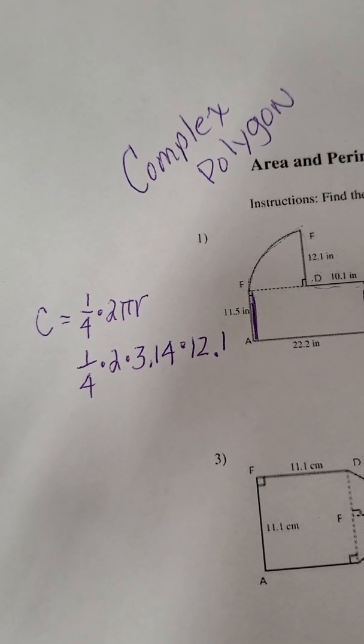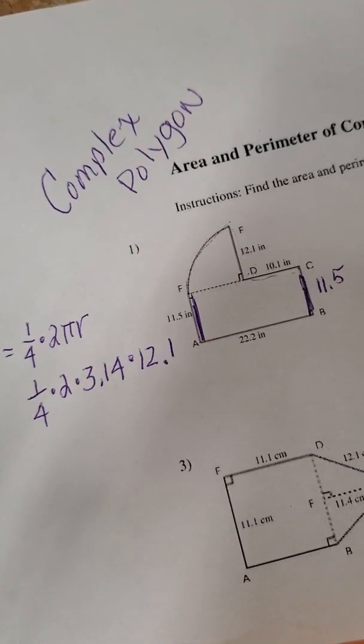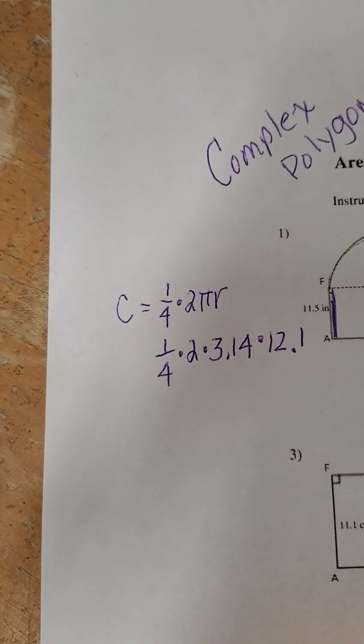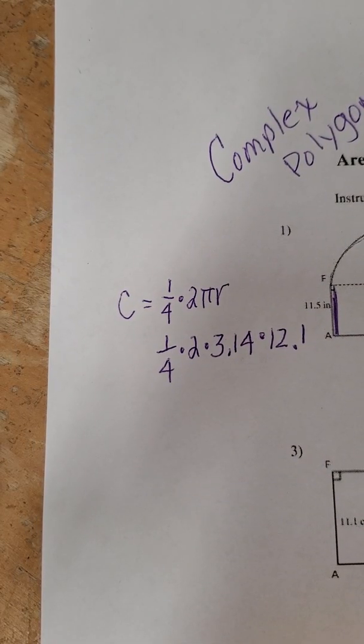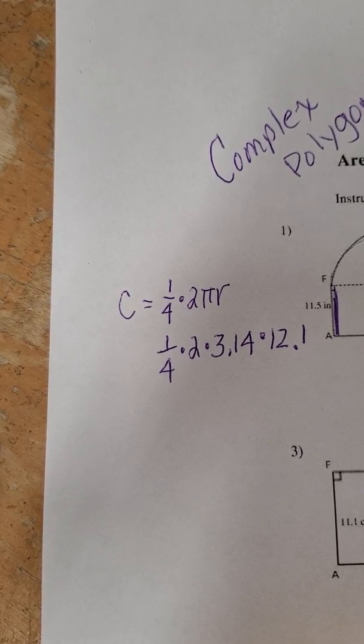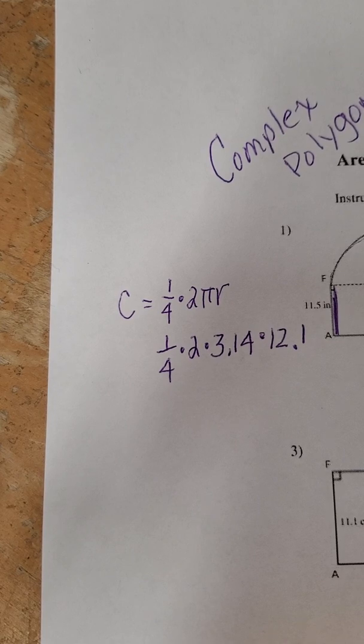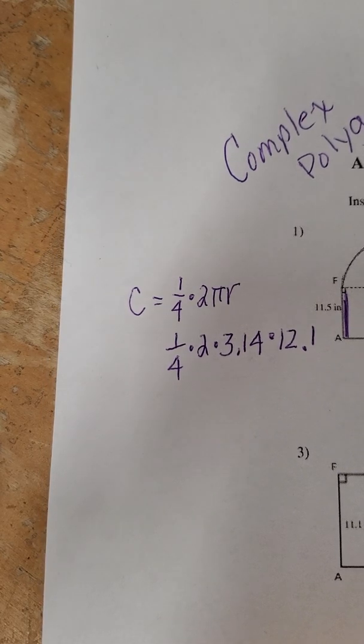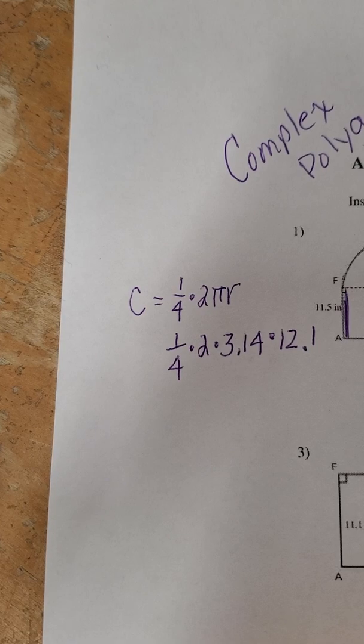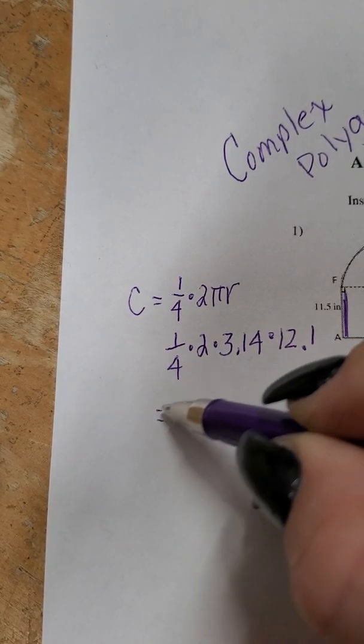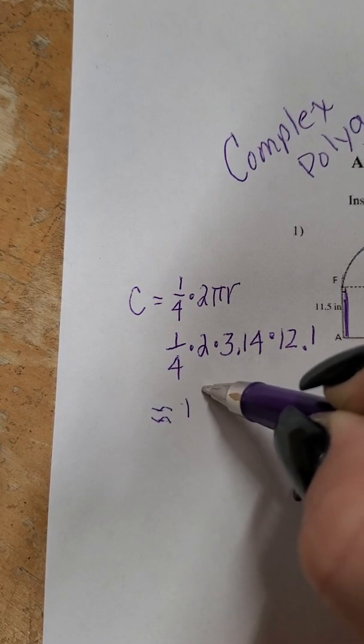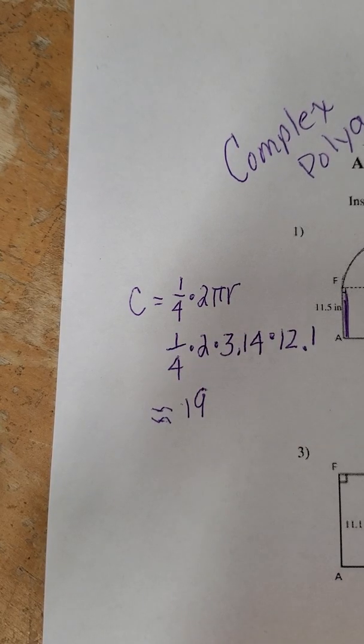Let me grab my calculator. And we'll type that in to see what we get. We have one-fourth times 2 times 3.14 times 12.1 equals and you get 18.997. So we can say that that's probably 19. It's approximately, so I'll use my little wavy signs there. It's approximately 19.